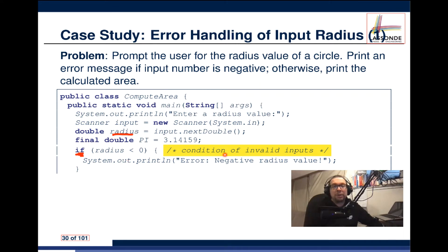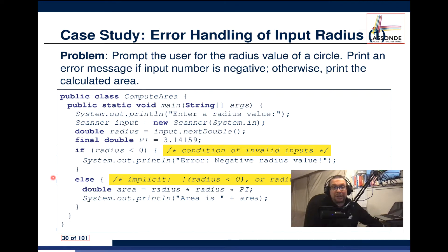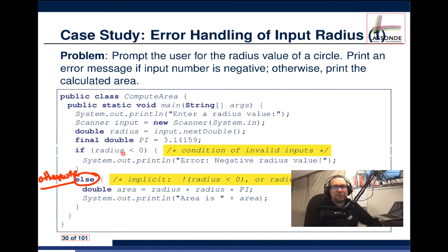If the radius is less than zero, we print the error message. Otherwise — the else branch — if that condition was found to be false, it implies the radius is greater than or equal to zero. In that case, we can safely do the calculation. We set up a double precision floating point variable called area.